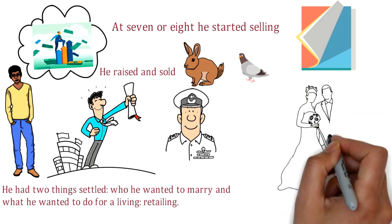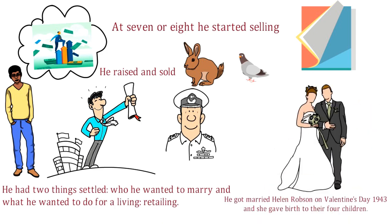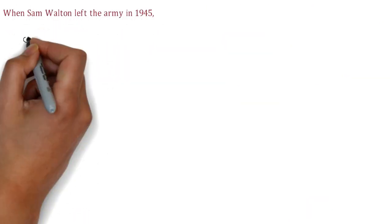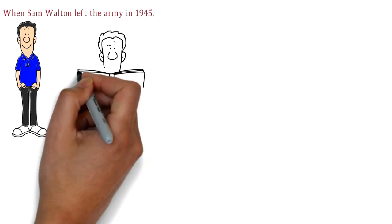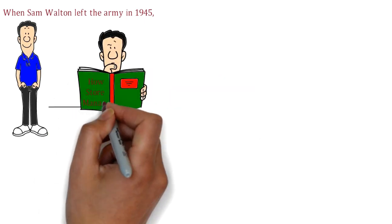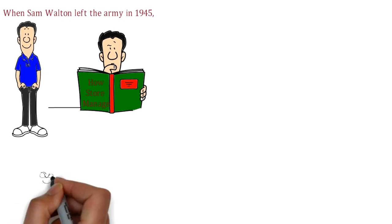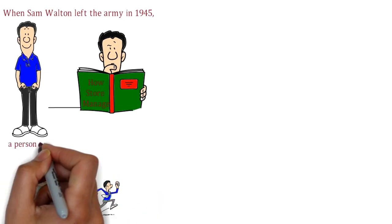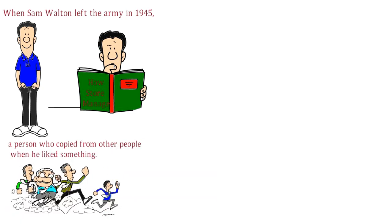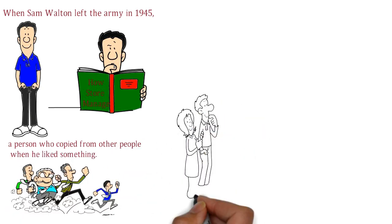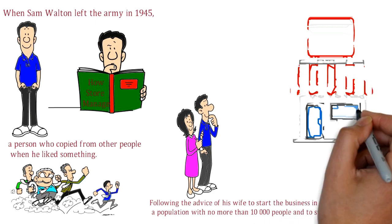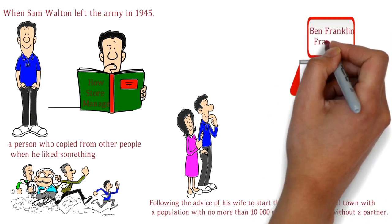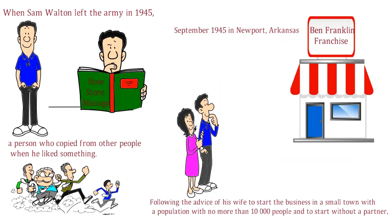He got married to Helen Robson on Valentine's Day 1943, and she gave birth to their four children. When Sam Walton left the army in 1945, he knew he wanted to go into business for himself. He started reading books on retailing and spending time in stores studying how they work. According to Walton, he was a person with a passion to compete and a person who copied from other people when he liked something. Following the advice of his wife to start the business in a small town with a population with no more than 10,000 people and to start without a partner, he opened his first store, a Ben Franklin franchise, in September 1945 in Newport, Arkansas, a cotton and railroad town of about 7,000 people, using his own savings and a loan from his father-in-law.